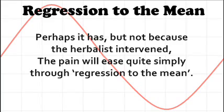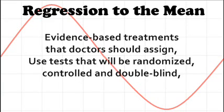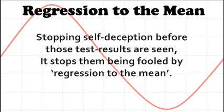Evidence-based treatments that doctors should assign use tests that will be randomized, controlled and double-blind. Stopping self-deception before those test results are seen, it stops them being fooled by regression to the mean.